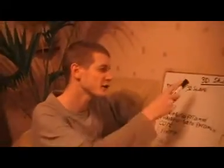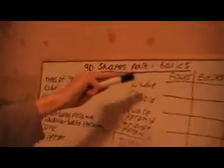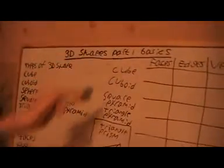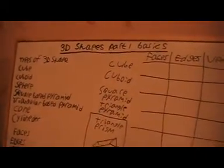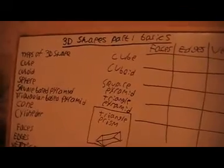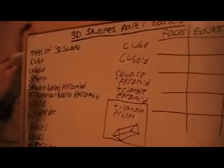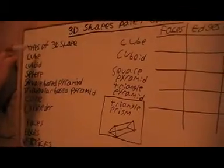In this video we're going to, because we've looked at 2D shapes, we're now going to move on and look at some 3D shapes. This is going to be part 1, which is going to talk about the basics, and there's actually only going to be 2 parts of this. We've got a few different types of 3D shapes.